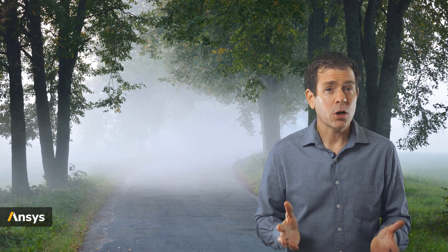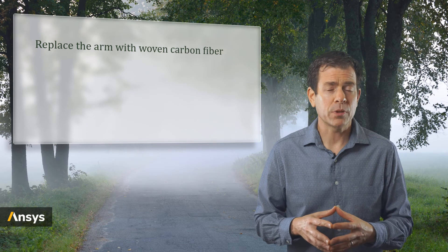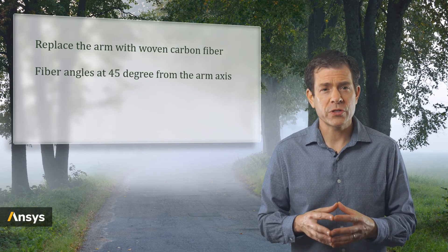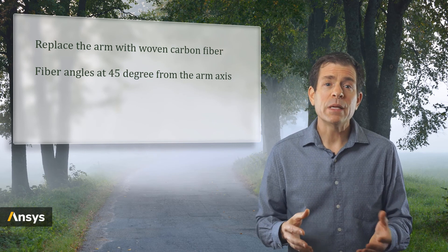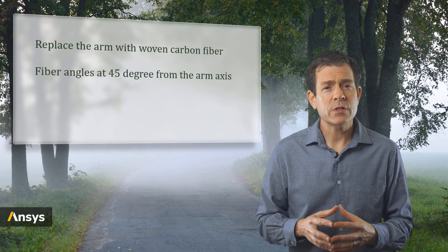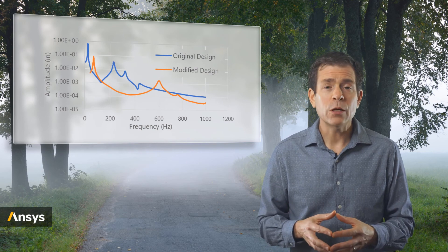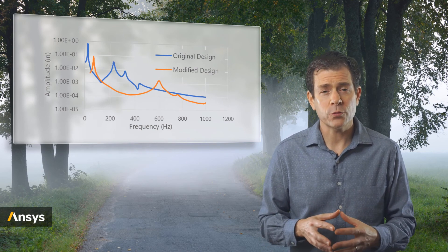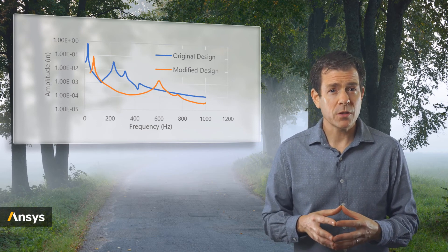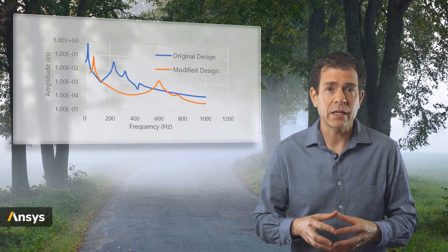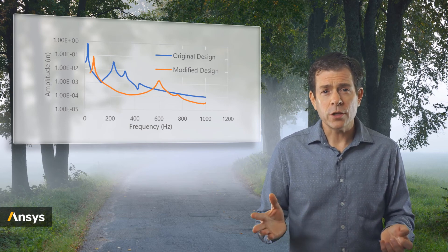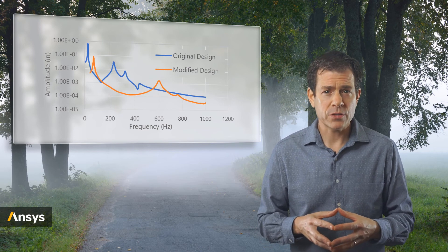Now that we can simulate this, what design improvements could minimize or eliminate the resonance? In our drone example, the arm is made of nylon. Let's replace the arm with a woven carbon fiber with fiber angles at plus and minus 45 degrees to greatly increase the torsional stiffness of the arm. We model that and repeat the harmonic analysis. Notice in the frequency response plot, the resonance at 230 Hz is gone. So when the blade is passing through this RPM, it will not excite the drone arm since there is no natural frequency there. While there are still some peaks in the frequency response plot in our modified design to investigate, such as close to 50 Hz and another one over at 600 Hz, they may be outside the actual flight operations of the drone.